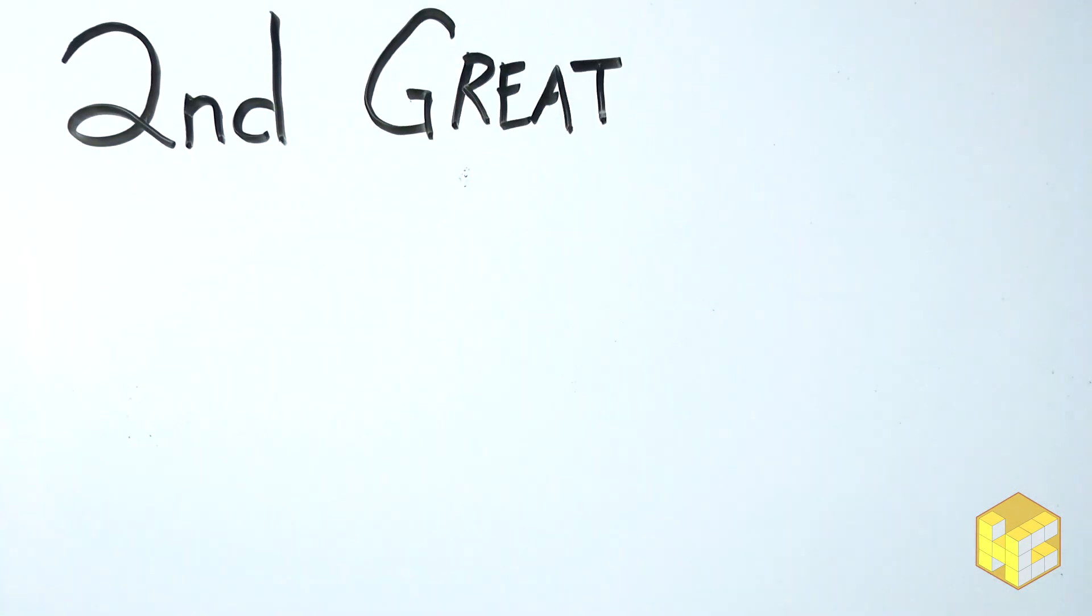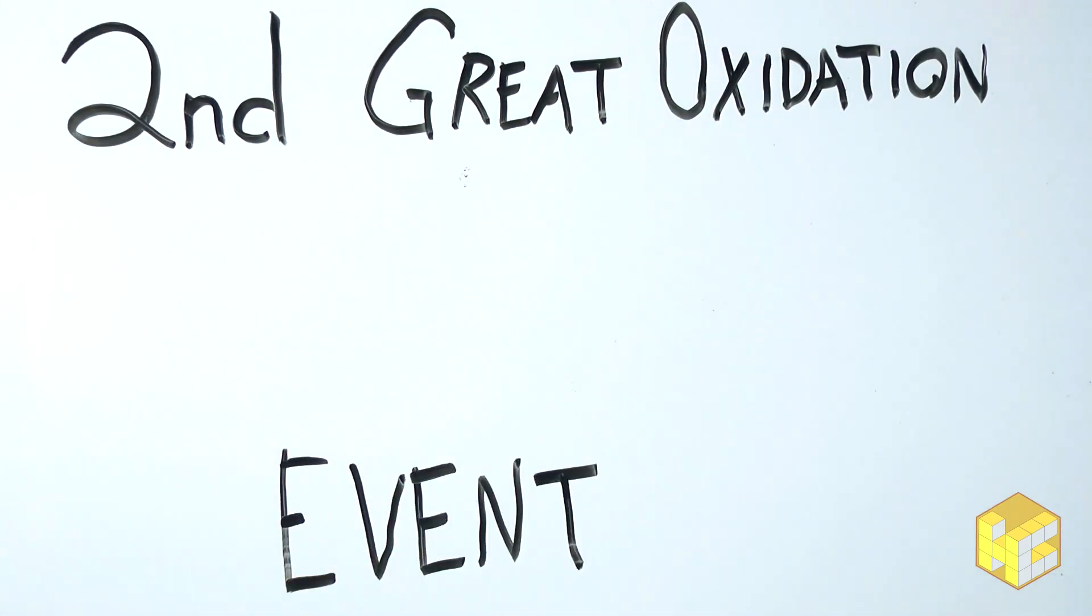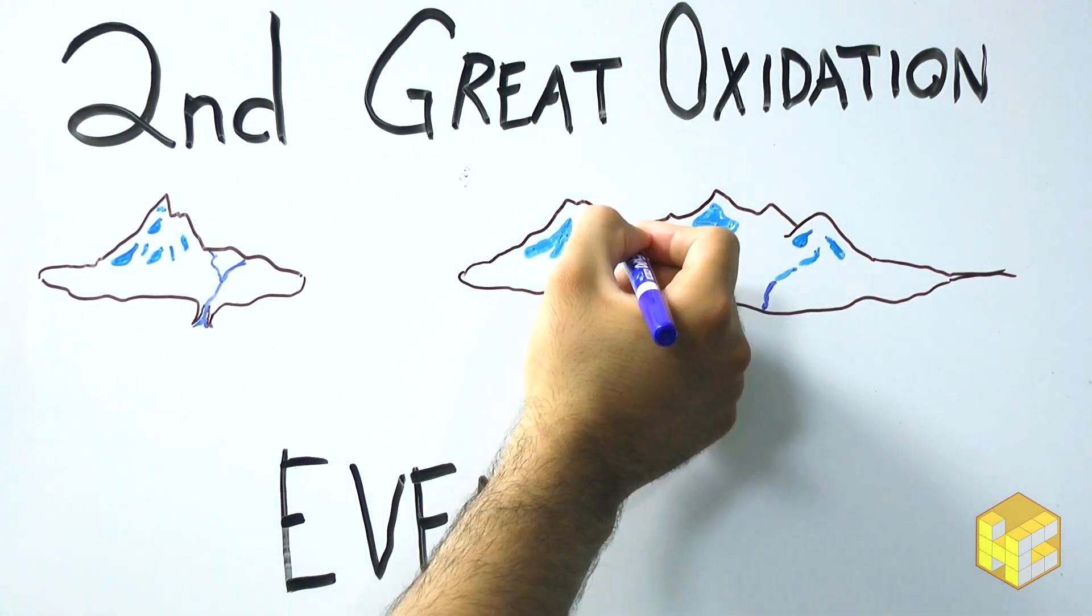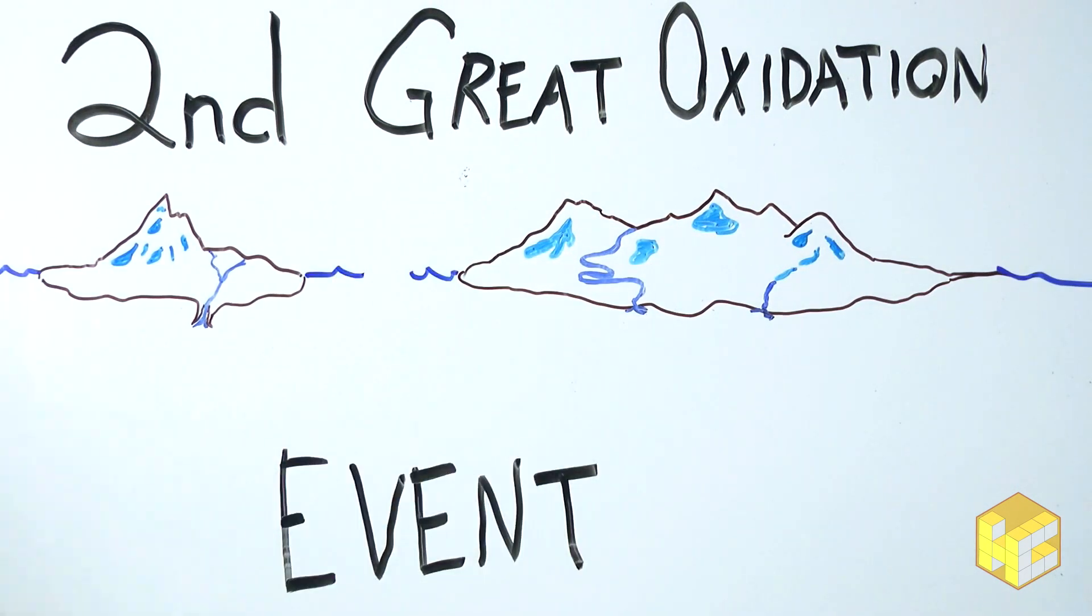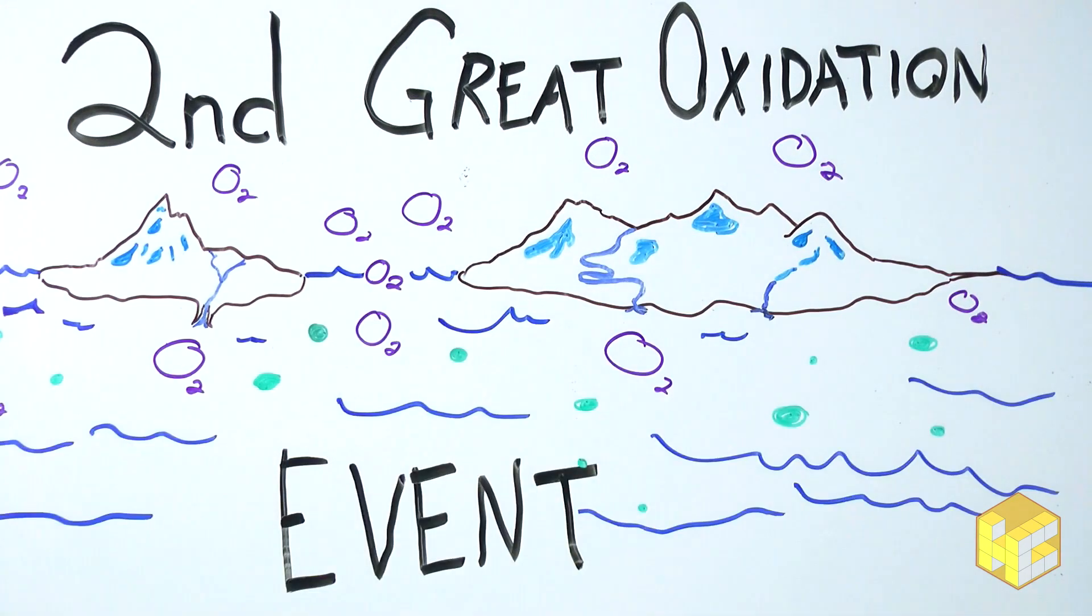When Rodinia broke apart, ending the second Snowball Earth, a second Great Oxidation event took place. This time, no inconveniently timed meteor impacts halted the boom of life and complicated life forms evolved. For a variety of reasons, subsequent supercontinents have not resulted in global glaciations, although there have been brief glacial periods.